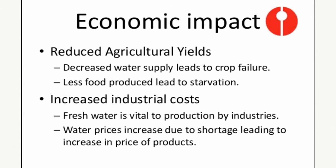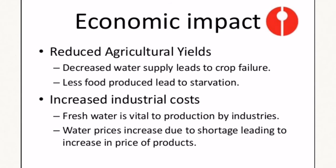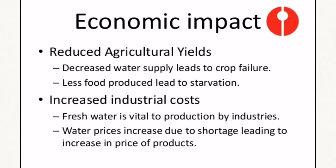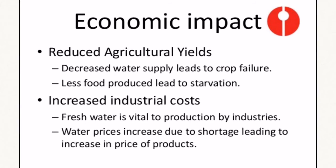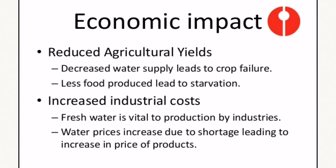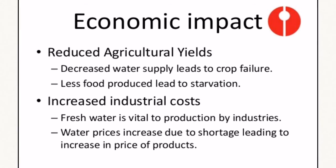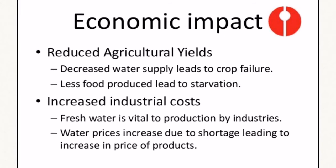In terms of economic impact, we are looking at reduced agricultural use due to a drop in water supply. When you don't have enough water for your agricultural fields and plantations, your plants will die. Plants, like us, need water to survive. As a result of crop failure, you produce less food, and that could have a direct impact on your human population — they could starve, and you could end up having a lot of conflict over food reduction.